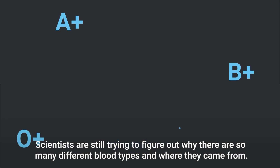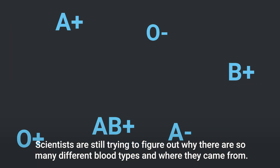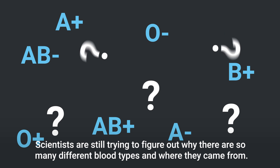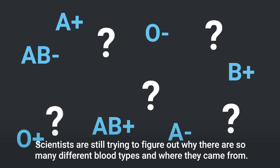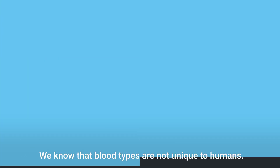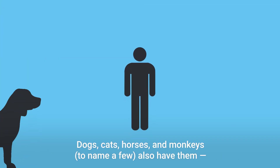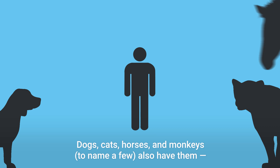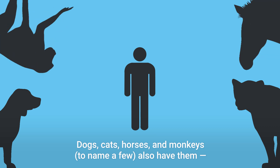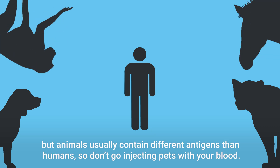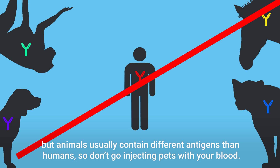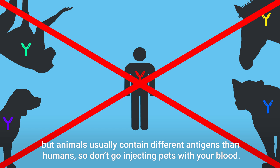Scientists are still trying to figure out why there are so many different blood types and where they came from. We know that blood types are not unique to humans — dogs, cats, horses, and monkeys, to name a few, also have them. But animals usually contain different antigens than humans, so don't go injecting pets with your blood.